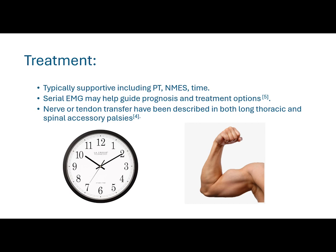Treatment is typically supportive — physical therapy, maintenance of range of motion, and neuromuscular electrical stimulation can help facilitate proper function over time. Serial EMGs may help guide prognosis and treatment options. In cases where you're not seeing appropriate nerve or muscle recovery on EMG and exam, you might consider bringing a surgeon in, as nerve transfer versus tendon transfer options have been described for both long thoracic and spinal accessory nerve injuries.